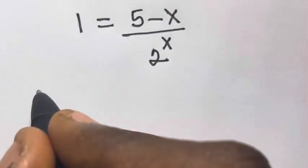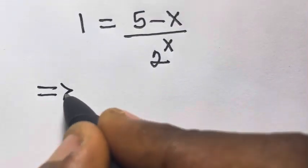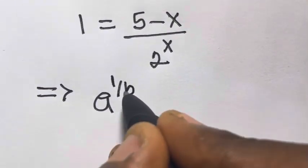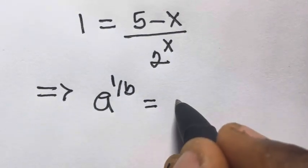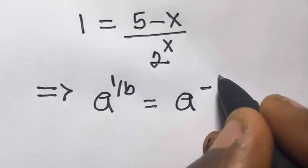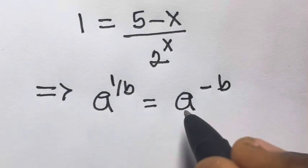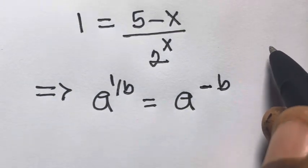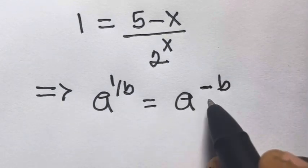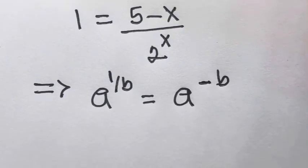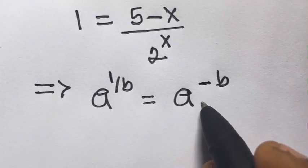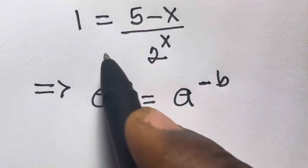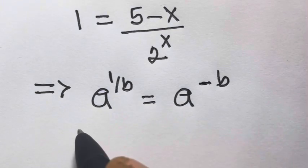From here let's recall that if we have a raised to power 1 over b, this is the same as a raised to power minus b. We call this the negative index. This means the minus turns into 1 divided by a raised to power b.